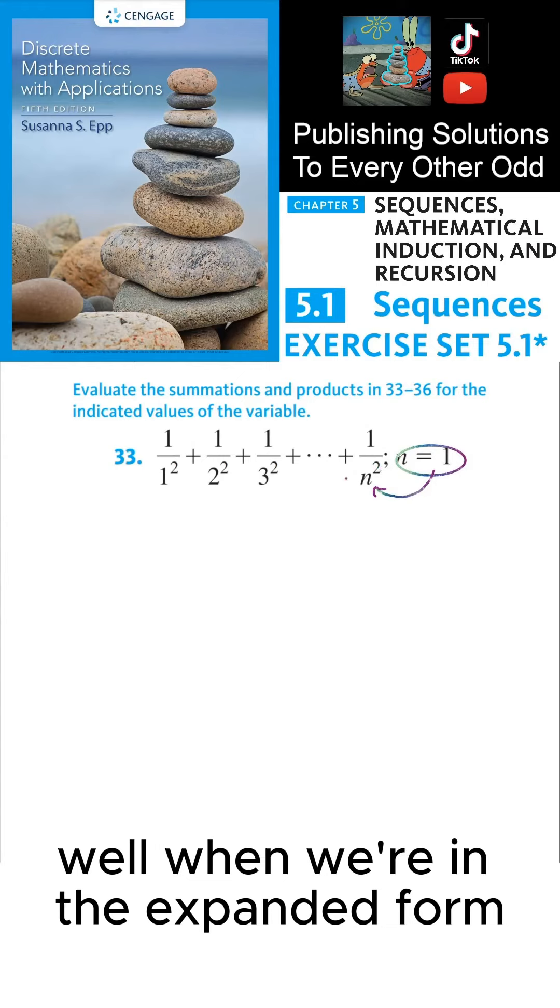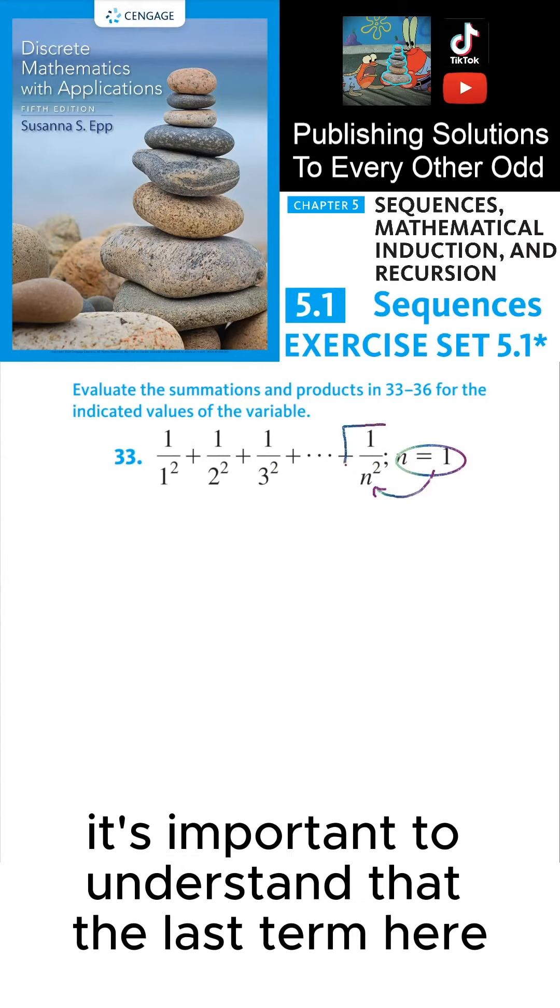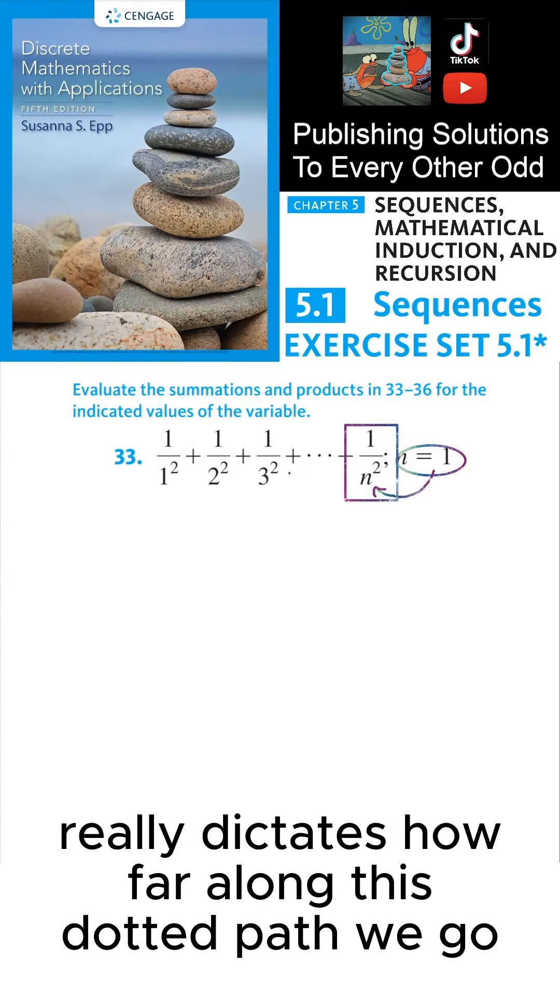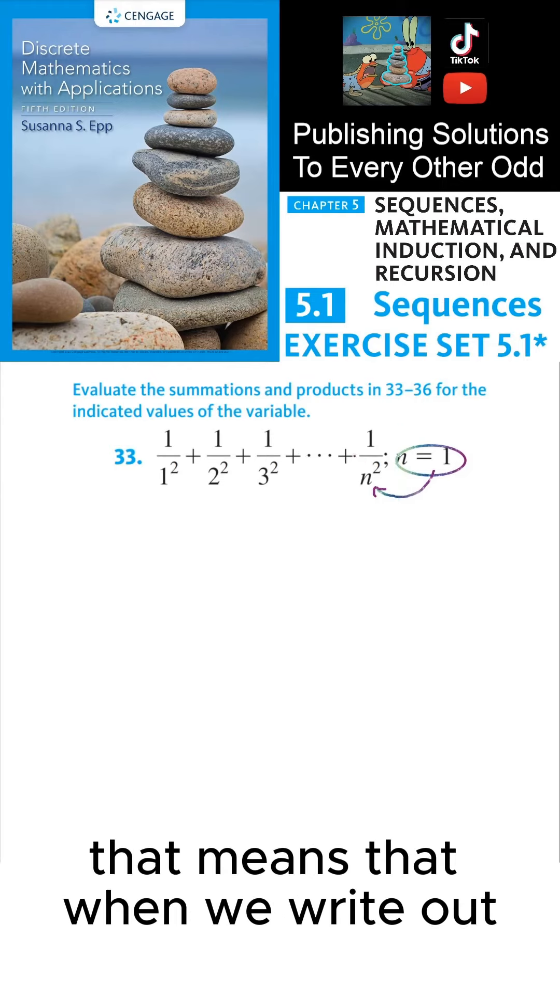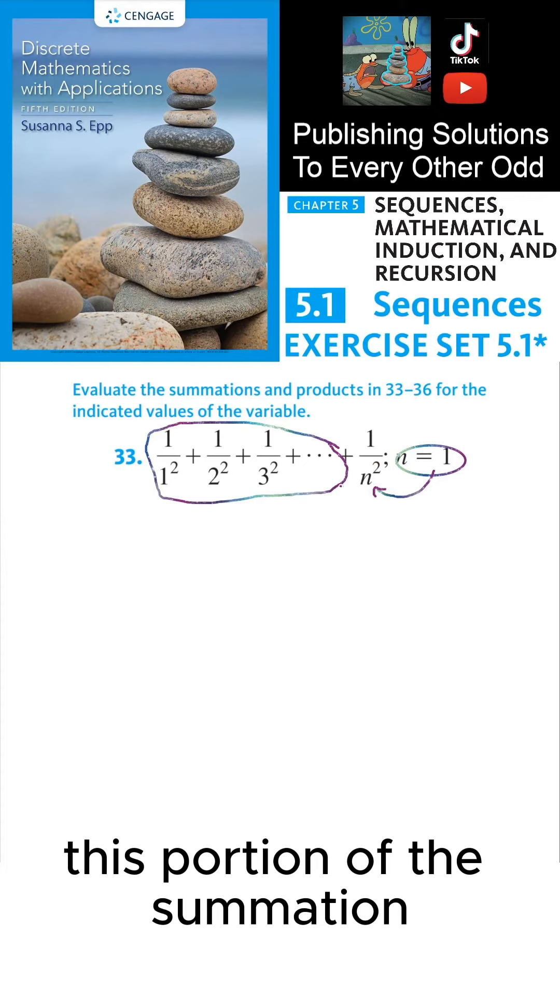Well, when we're in the expanded form, it's important to understand that the last term here really dictates how far along this dotted path we go. So, if our last term is 1 over 1 squared, that means that when we write out this portion of the summation,